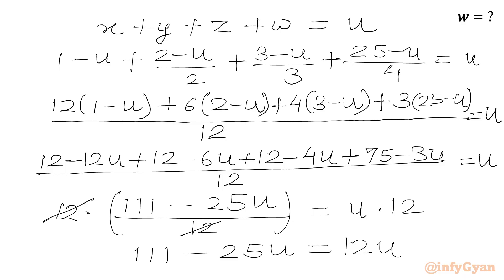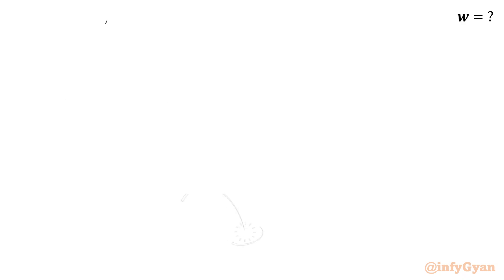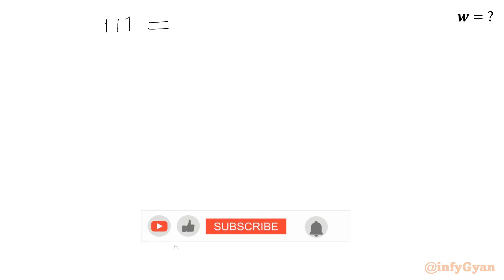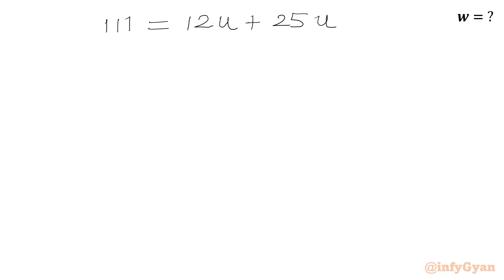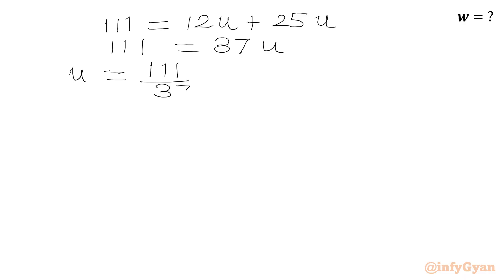Now we add 25u to both sides: 111 equal to 12u plus 25u, so 111 equal to 37u. Dividing both sides by 37, we get u equal to 111 over 37, which equals 3. So u is equal to 3.